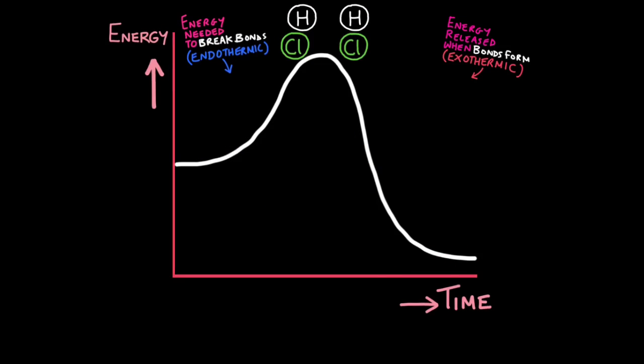After the atoms separate, they will combine in new ways and form new bonds. The hydrogen will bond to the chlorine and so will this one. We now have two new molecules made, the products. We started off with the reactants, hydrogen and chlorine, and we've ended up with two new molecules, the products.